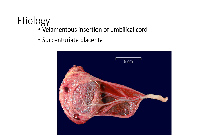The causes for Vasa Previa include velamentous insertion of the umbilical cord and succenturiate lobe of the placenta. Velamentous insertion of the umbilical cord means: usually the umbilical cord is attached to the center of the placenta — this round structure is the placenta — the cord should be attached directly here, somewhere at the center.